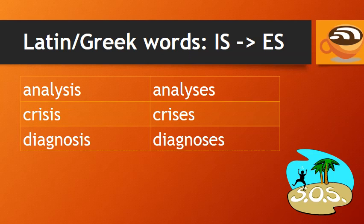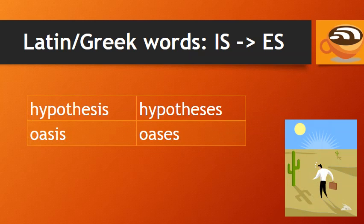Other Latin or Greek words have the singular form ending in -IS and the plural form ending in -ES. For example: the plural of analysis is analyses; crisis, crises; diagnosis, diagnoses; hypothesis, hypotheses; oasis, oases.